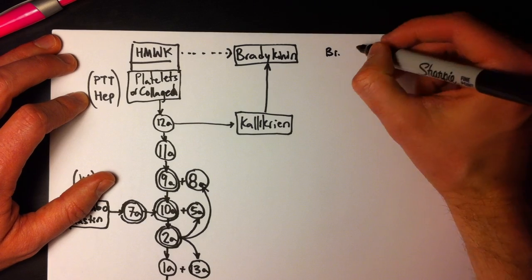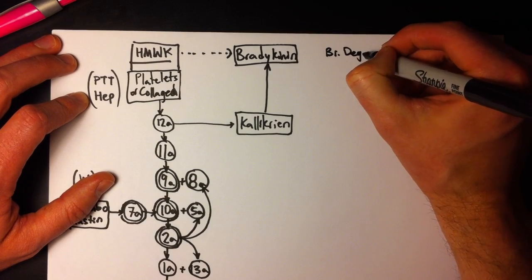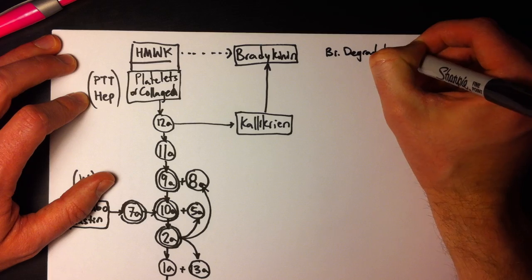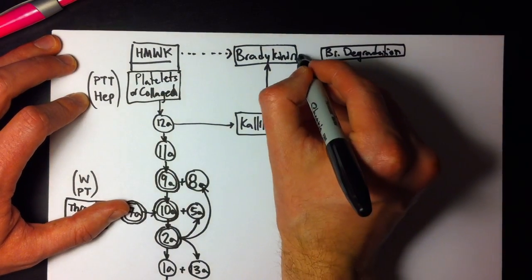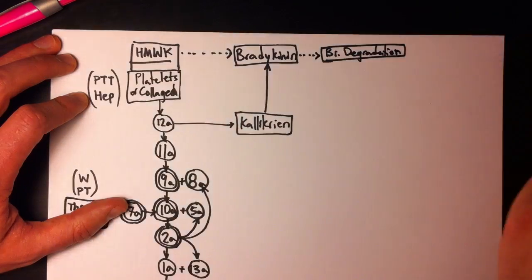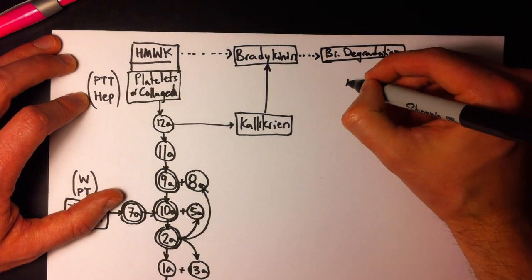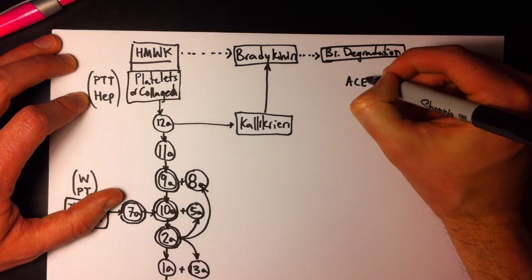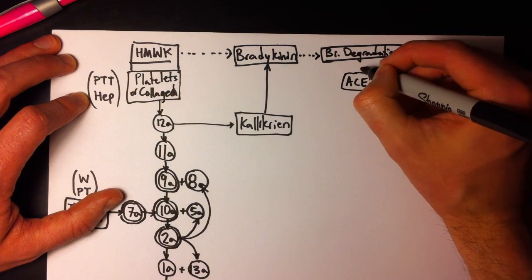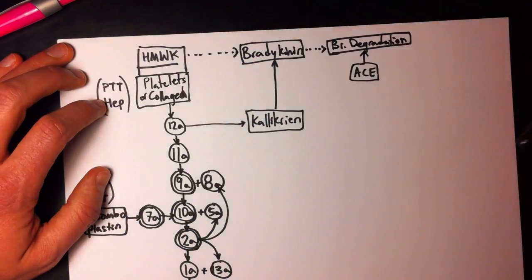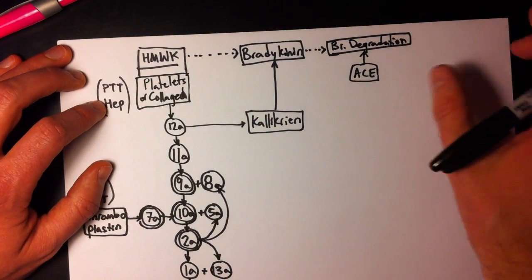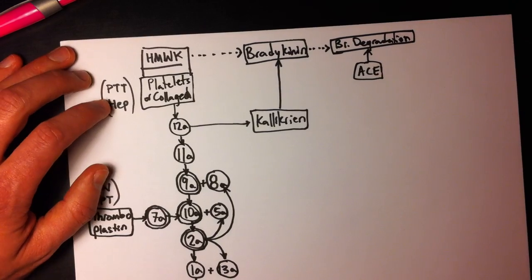Now bradykinin is broken down, so I'm just going to put down bradykinin degradation. I don't know if that's a clinically significant product that it produces, I don't know what it is. And this synthesis is catalyzed by ACE, which you've probably heard of ACE inhibitors, and that they cause bradykinin to rise. That's why, if you block this, you prevent bradykinin from being degraded.